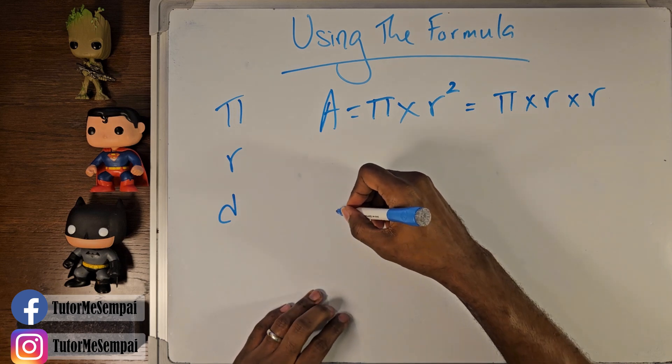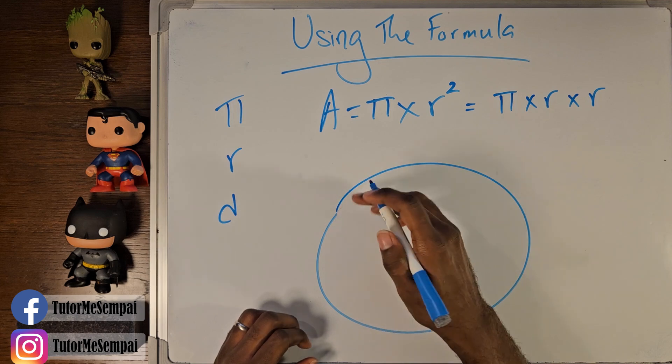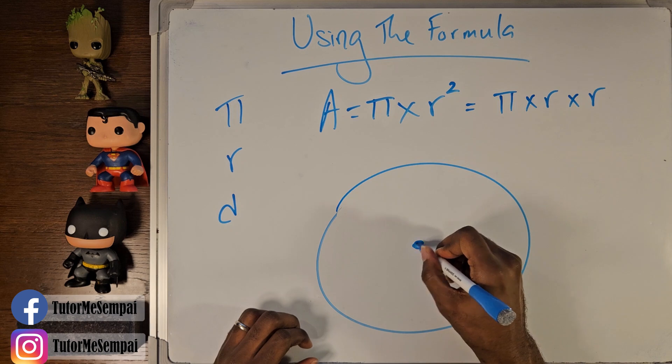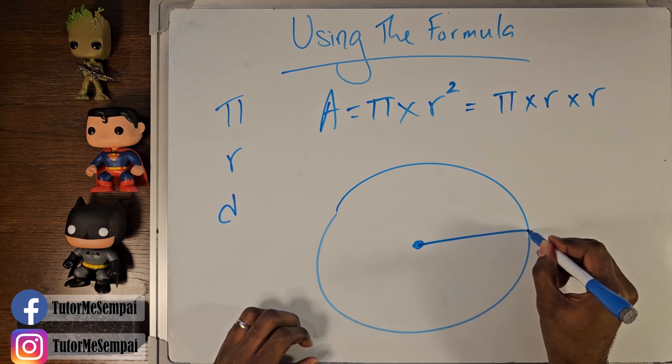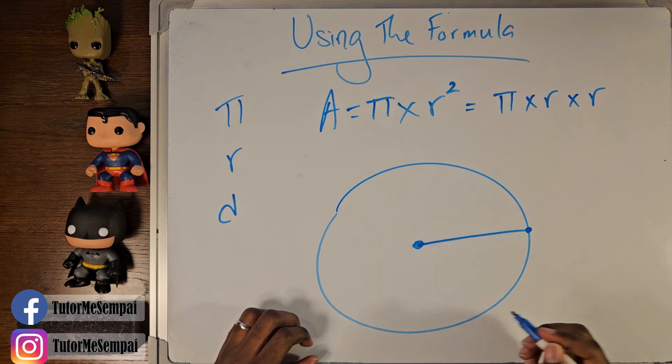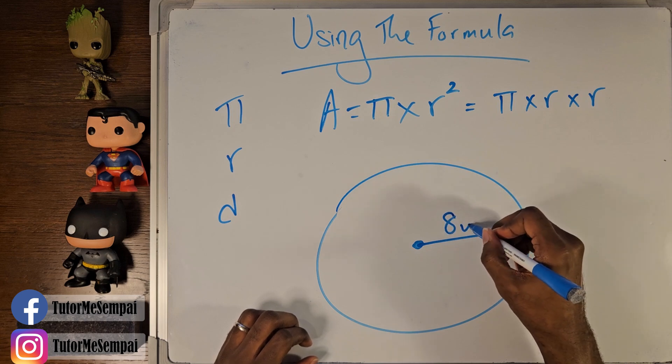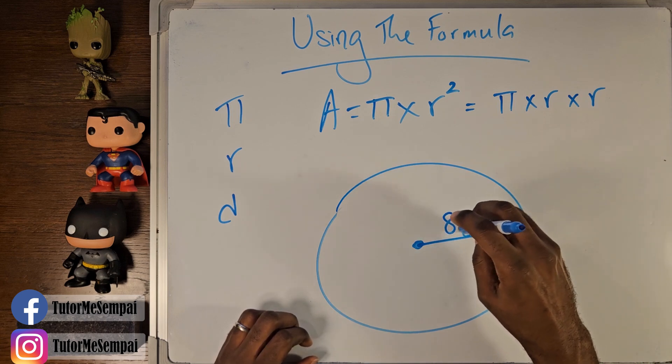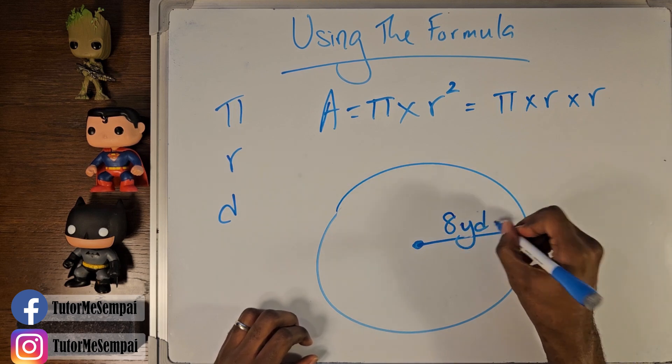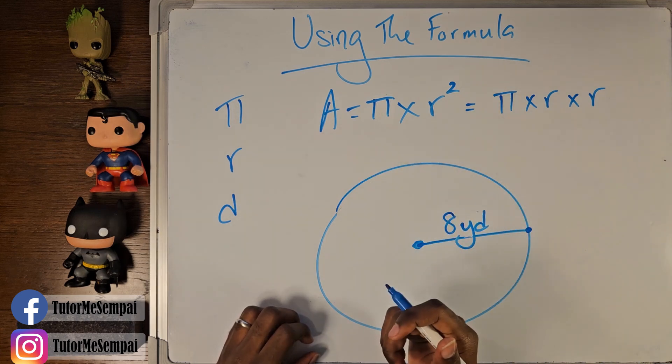So if we know our radius, for example, and we said radius is going to be the line segment that goes from the middle to a point on our circle, right? So we can fill in that point if we need to. Our radius, let's say it's eight yards. We can plug in our numbers and see what we get.